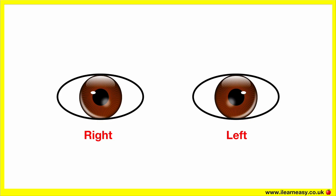Testing eye movements is an important part of a neurological or eye examination. It assesses the function of the six extraocular muscles and the cranial nerves three, four and six — the oculomotor, the trochlear, and the abducens.